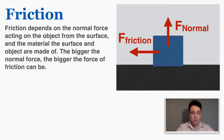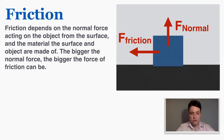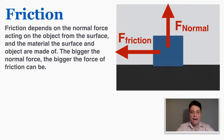Friction depends on the normal force acting on the object from the surface and the material the surface and object are made of. We're going to talk about that in more detail and give an equation that relates these things. The bigger the normal force on the object, the bigger the force of friction can be — the more force the surface pushes up with, the more friction the object experiences.